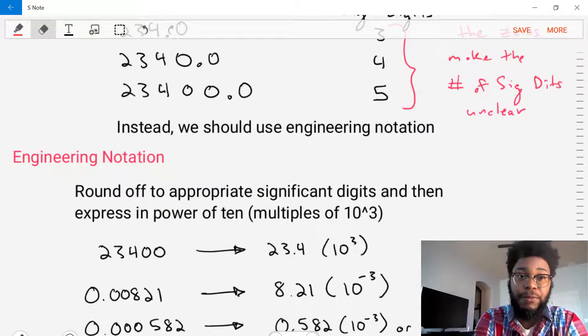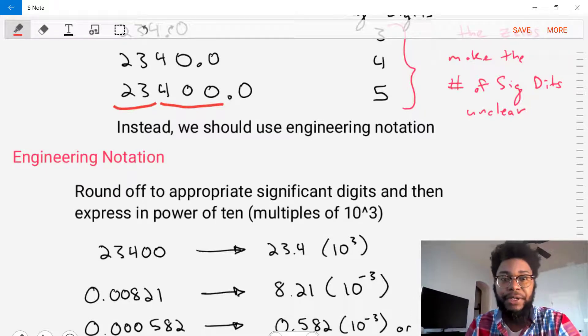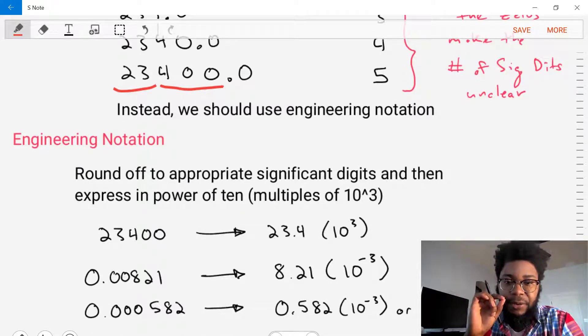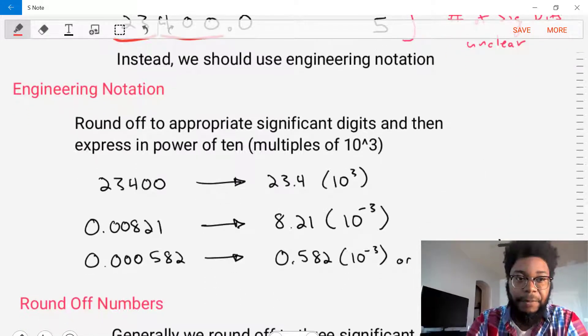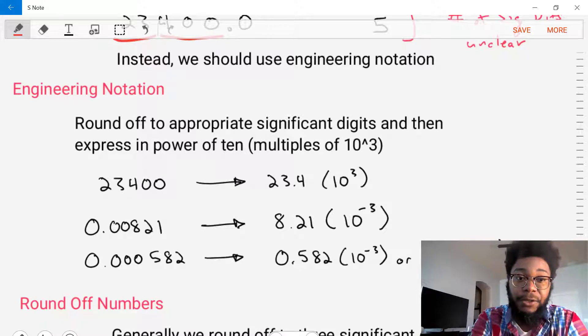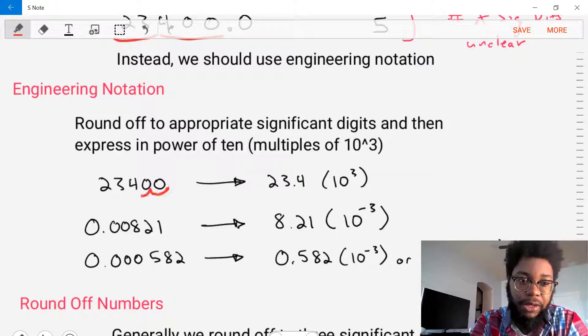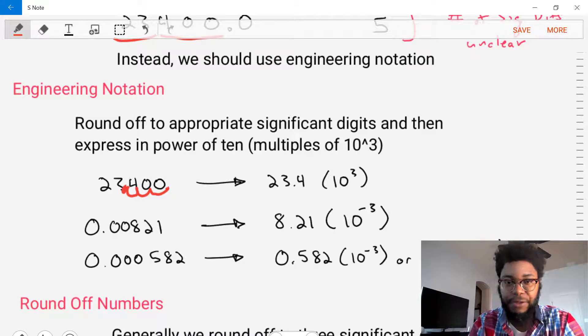So our first example will be the last one here, this 23,400 value. We want to convert this. We want to round the number, but we also want to convert it to an expression in powers of 10. Well, how do we do that? First we'll want to take from where we are on our decimal point, and then we'll want to try to move. If we're doing multiples of three, we want to move three points: one, two, three, and we'll move the decimal point over to the left.